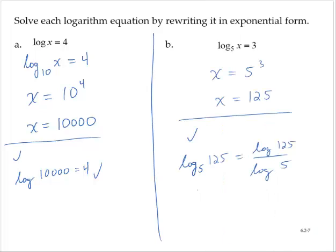So that checks out as well. So x is 125 for the second equation, x is 10,000 for the first equation.